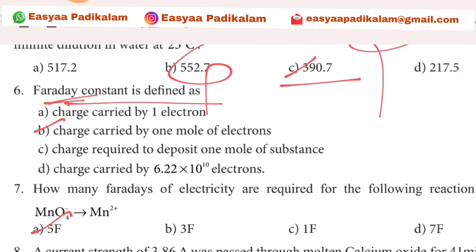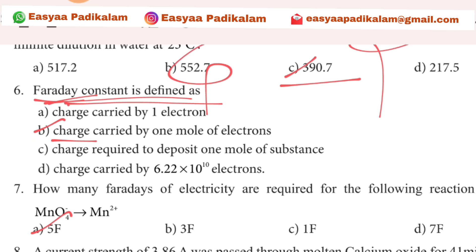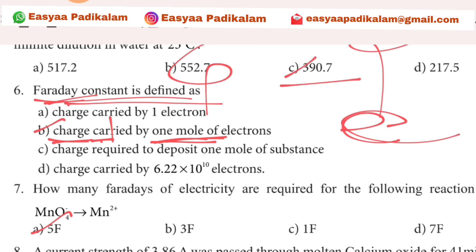Sixth question: Faraday constant is defined by — let's look at the options. Charge carried by one mole of electrons. If you get the charge carried by one mole of electrons, charge is one mole of electrons. So the answer is: charge carried by one mole of electrons.